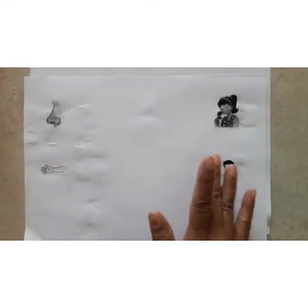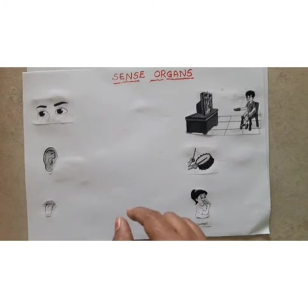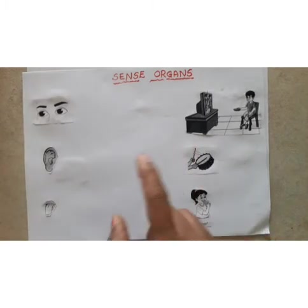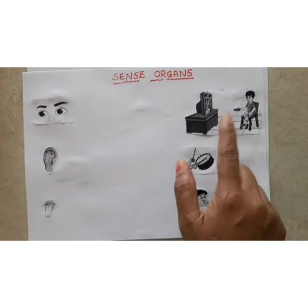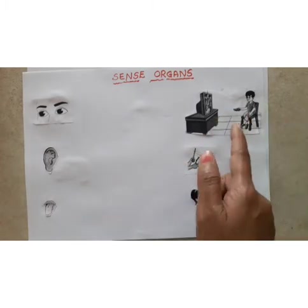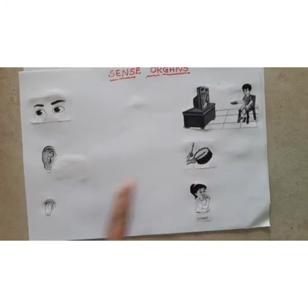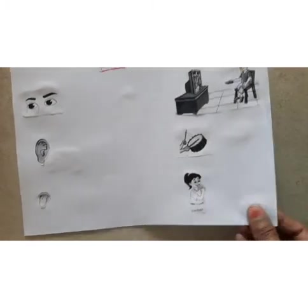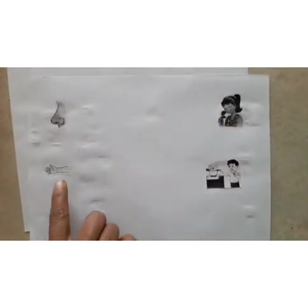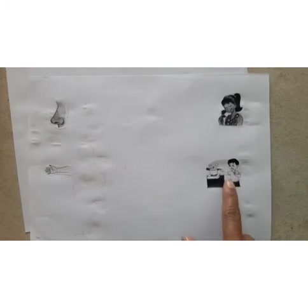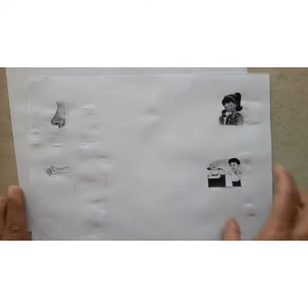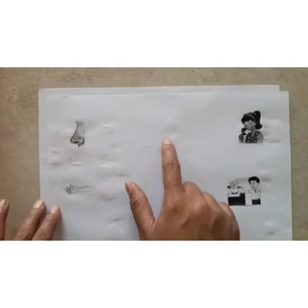First of all, take pictures of the five sense organs and their functions. Eyes help us to see; ears help us to hear; tongue helps us to taste; nose helps us to smell and breathe; skin helps us to feel. Write their organ names and functions.